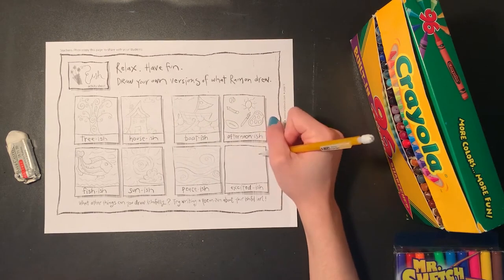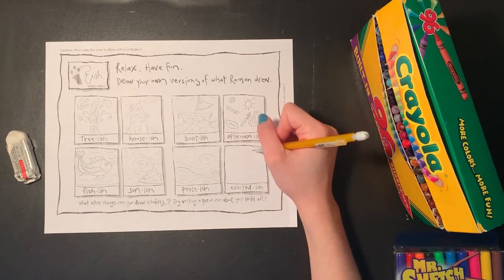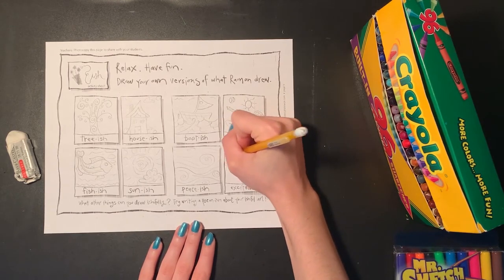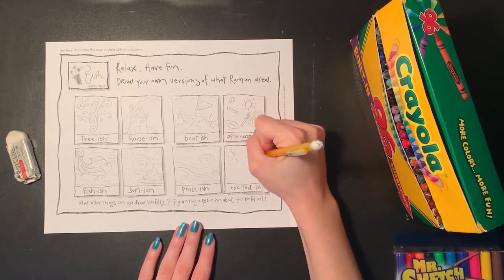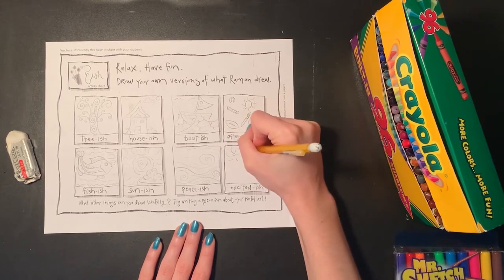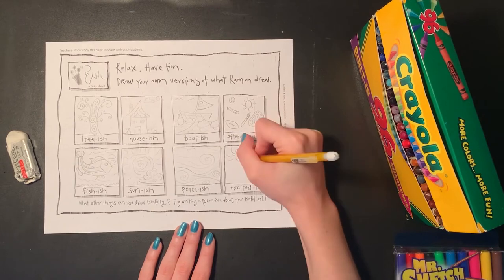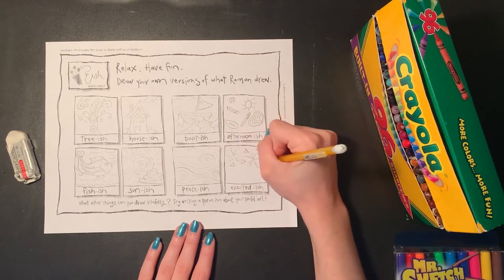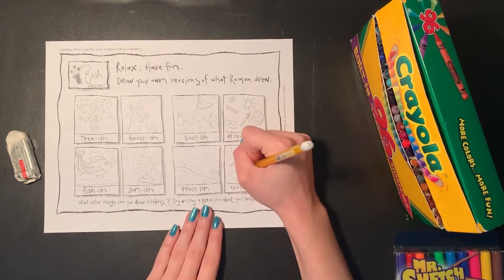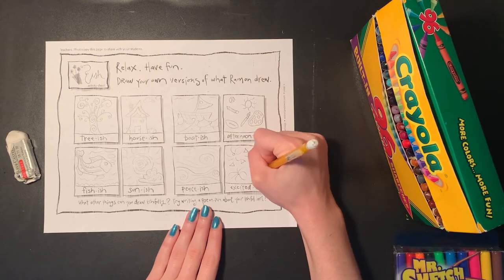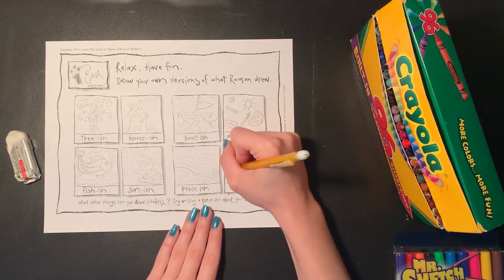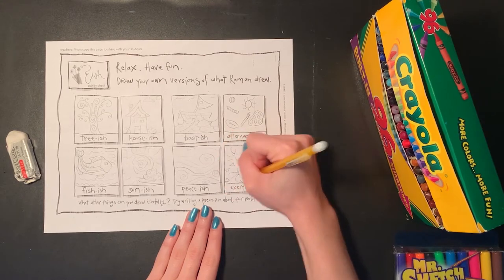And then the last one is excited-ish. So what do you think excitement looks like? I think excitement looks like big bursts of color, almost like fireworks. I think excitement looks like fast lines and pointy shapes. I think excitement looks like happy faces and laughter. But what do you think excitement looks like? And how can you draw excitement? It can really look like anything. Maybe what you think excitement looks like looks different than what I do.